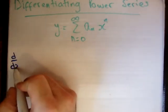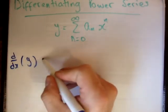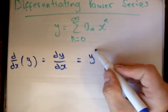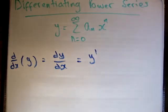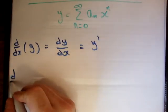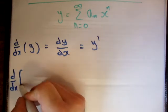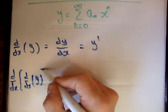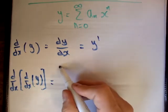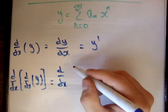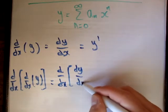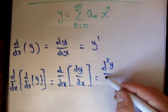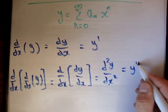Alright, so if I want to get d dx of y, that's going to become dy dx. And just for ease of notation, I'm going to call that y prime. Similarly, if I get d dx of d dx of y, I'm going to get d dx of dy dx. That's going to become, of course, d2y dx squared is equal to y double prime.